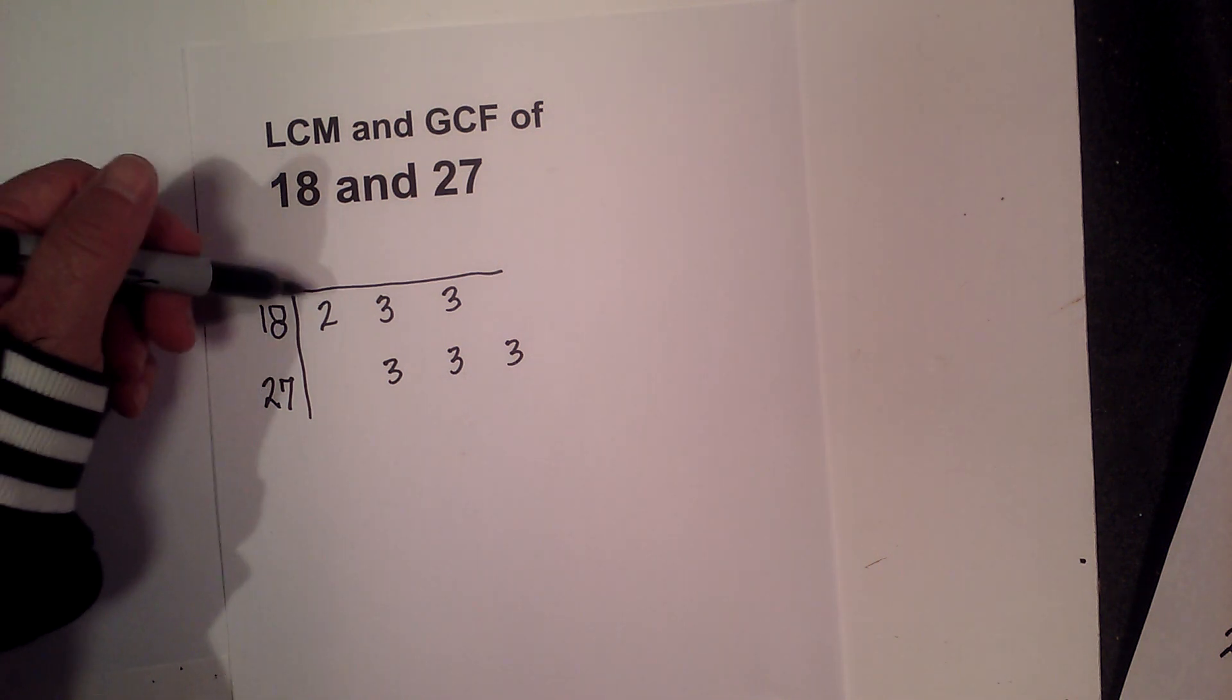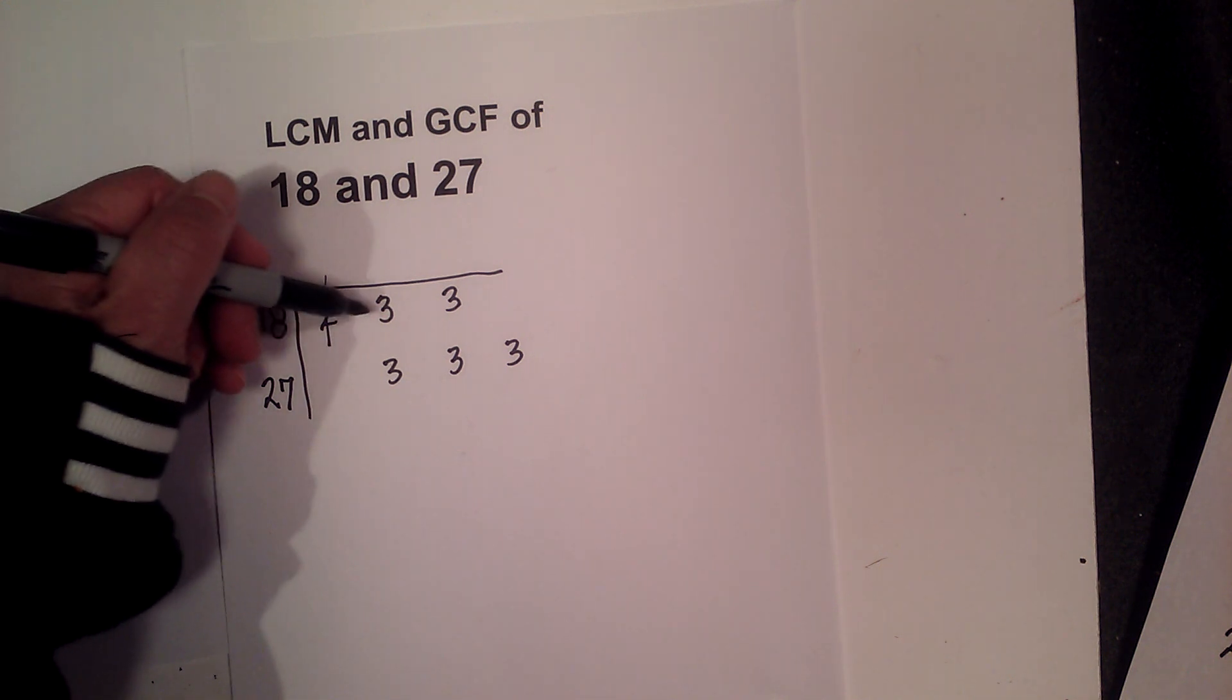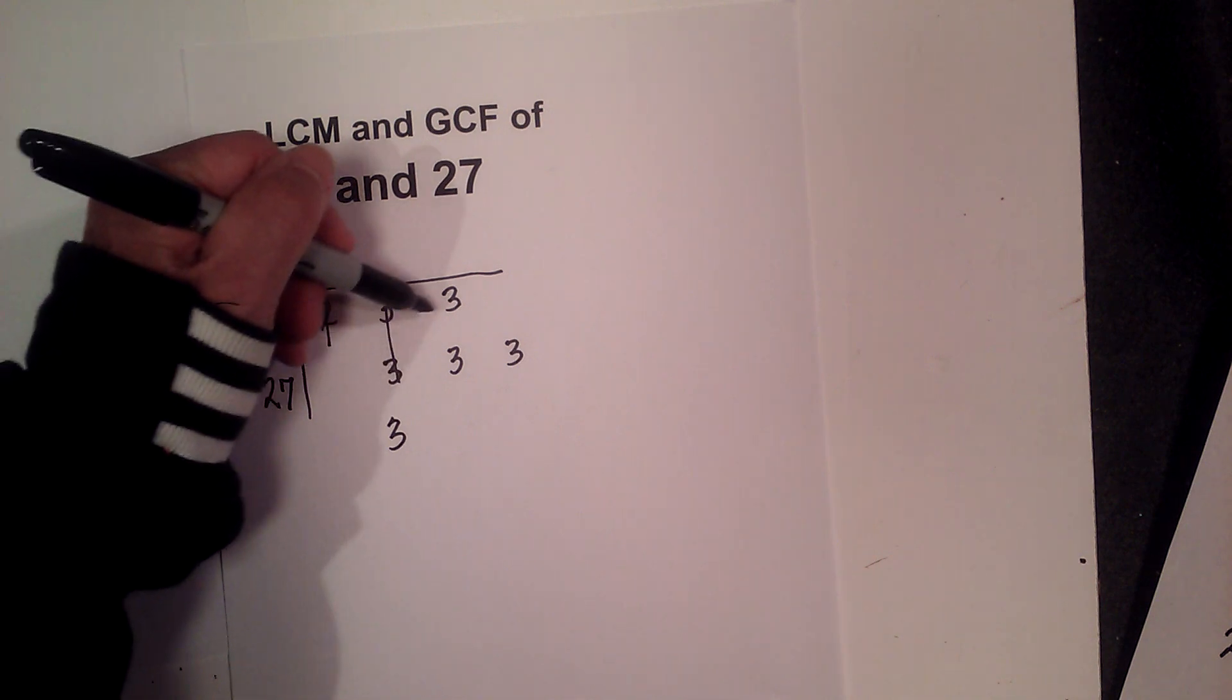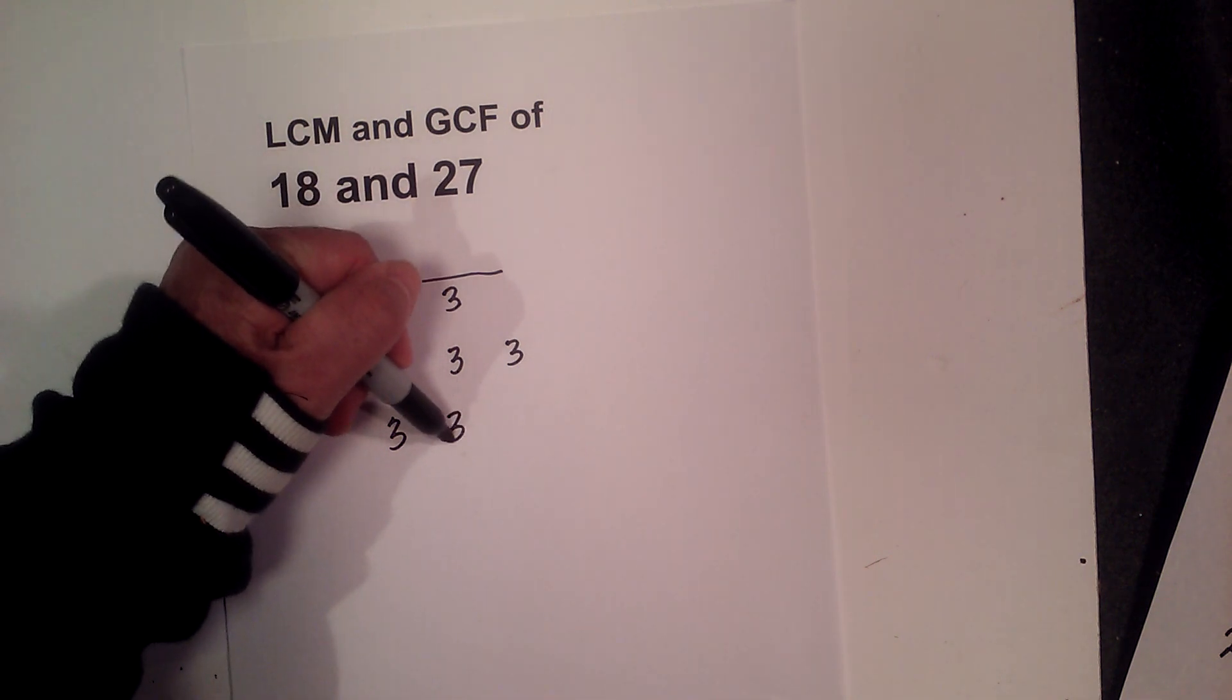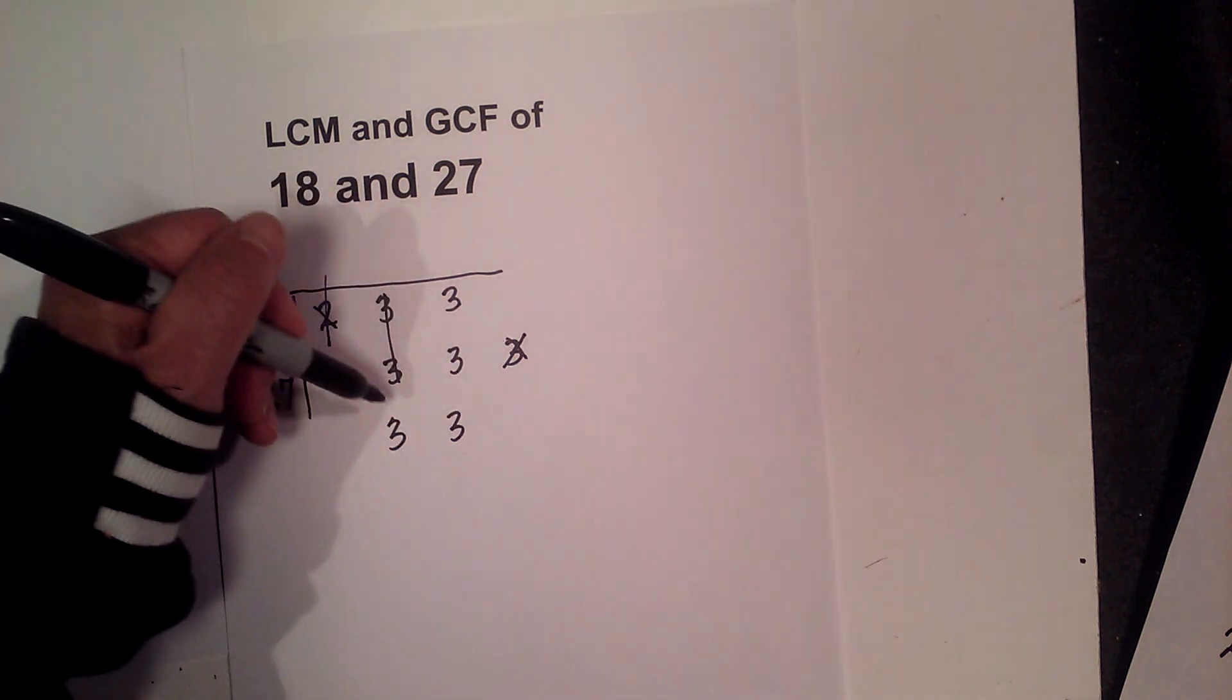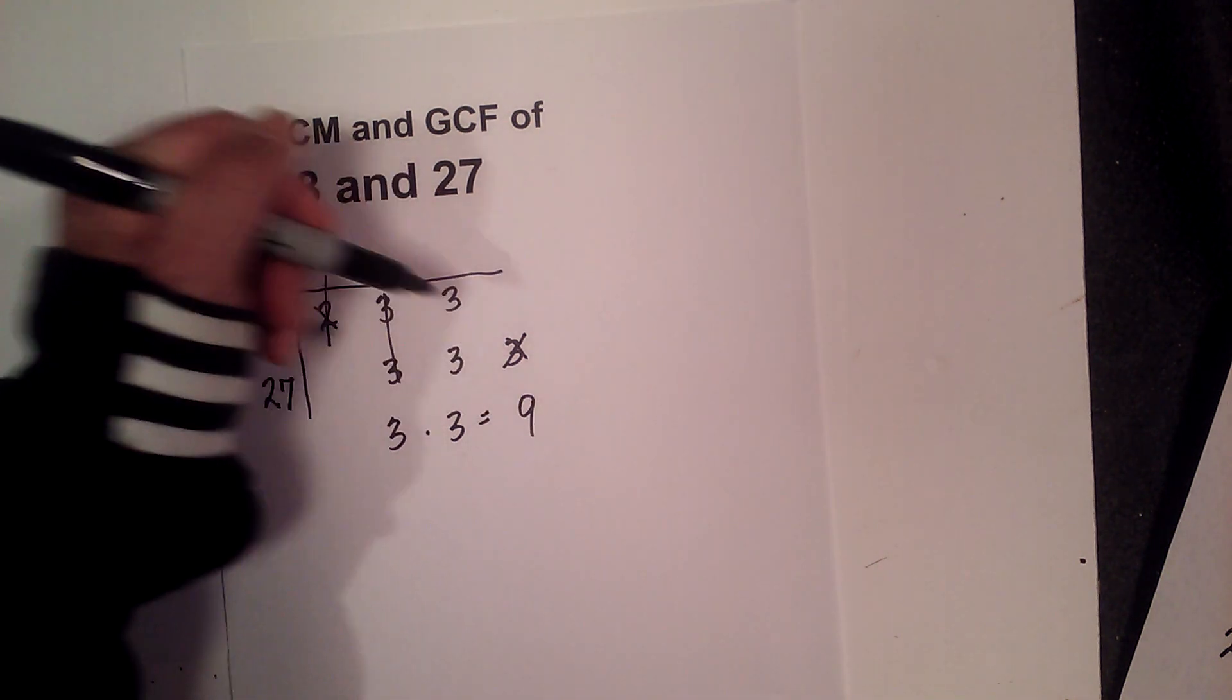So 2 will not work. These 3 are vertical pairs, so I'll write this 3. This is a vertical pair, so I'll write this 3. And then we can't use this 3 right here. So then 3 times 3 is 9.